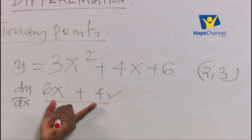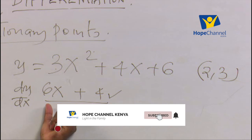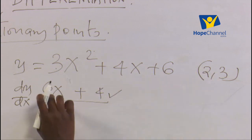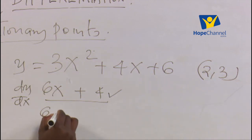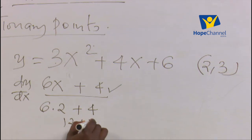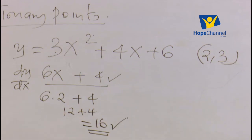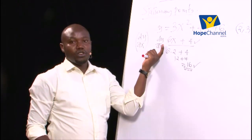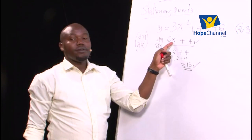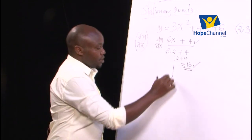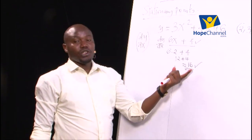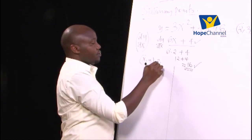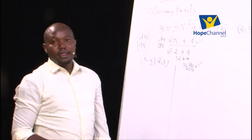This is the first part: differentiation. From here, we get the gradient of that given curve by substituting the value of x. So I'm going to have 6 multiplied by 2 plus 4, which is 12 plus 4, giving me 16. The second subtopic: getting the gradient of a given curve — first get the gradient function, then substitute the value of x, then get the gradient.